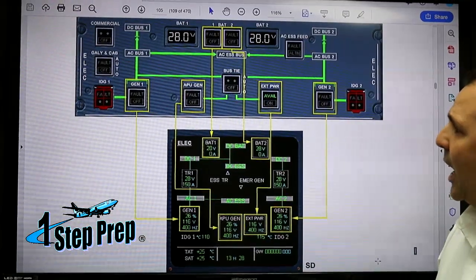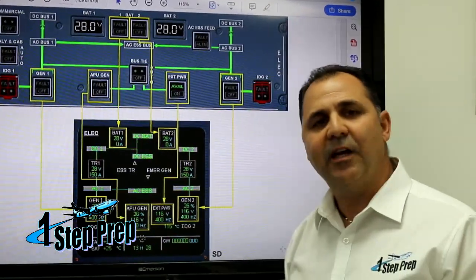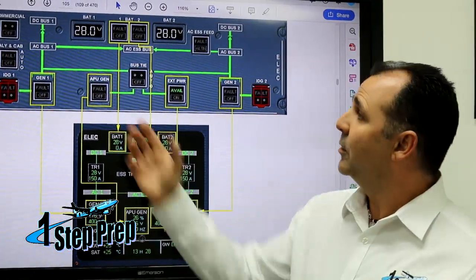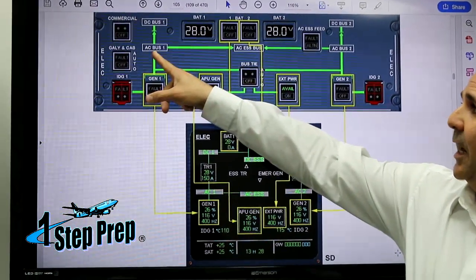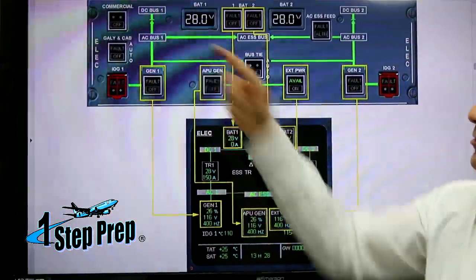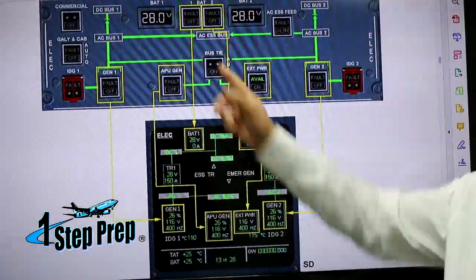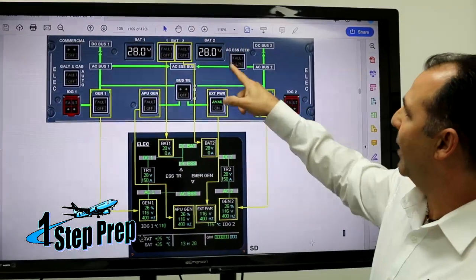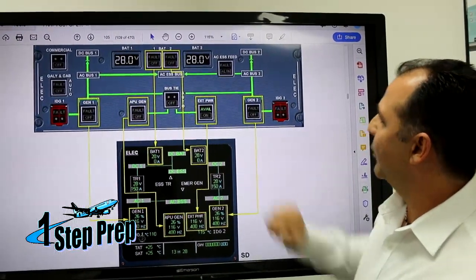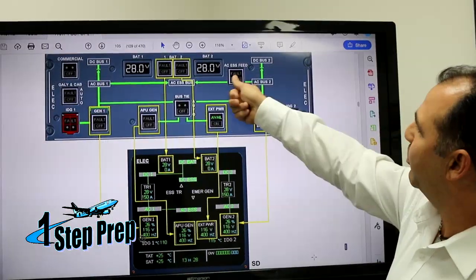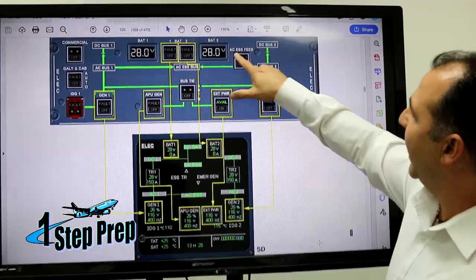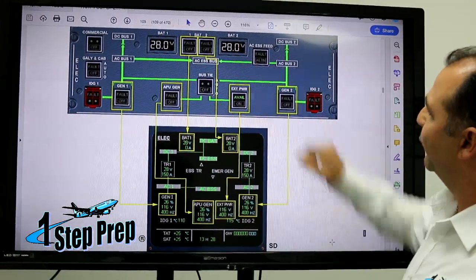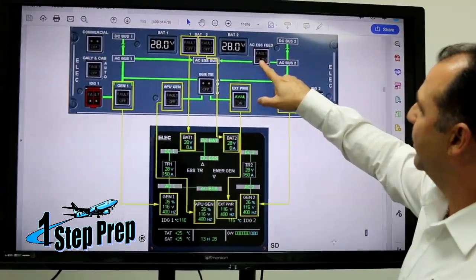Now how can we get back AC Essential Bus if we lose the normal power source AC Bus number one? If we come here to the panel, the action is going to be to press the AC Essential Feed button to the alternate mode. Once you press AC Essential Feed, we're going to go into the alternate mode.